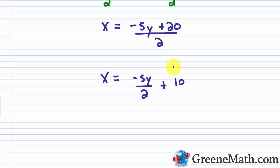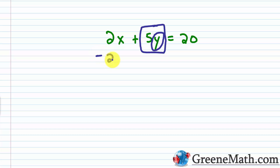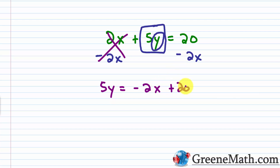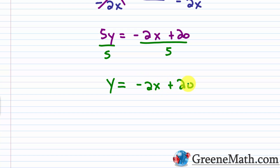I'm just showing you that you can write things in terms of one variable — x equals some expression. I can also solve this equation for y. The first thing I want to do is isolate the variable term with y involved. Because 2x is being added to 5y, I subtract 2x from each side, giving 5y equals negative 2x plus 20. Then I divide both sides by 5, so y equals negative 2x plus 20 over 5.